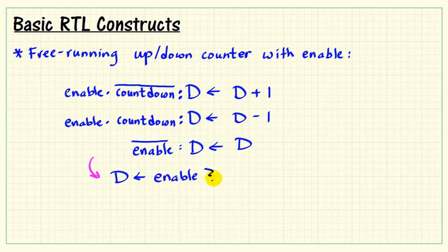So we can write this more compactly as D gets—let's check enable, is enable active? If yes, then we consider countdown. We say, is countdown active? If yes, we should use the value D minus 1. Otherwise, we should use D plus 1. So that whole thing, then, is the true condition on our test of enable. Well, we would say otherwise, if enable is inactive, then D is supposed to get filled with whatever is in D right now.